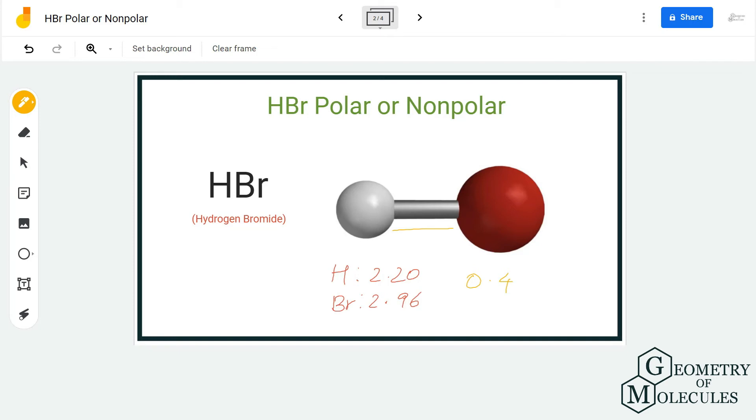The region around bromine atom will have partial negative charges, and the region around hydrogen will have partial positive charges. These are the poles formed in this molecule. As there are poles in this molecule due to the net dipole moment, HBr is a polar molecule. So hydrogen bromide is a polar molecule.